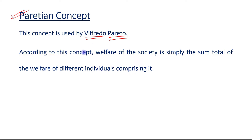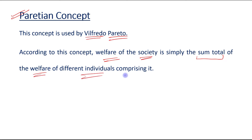The Paretian concept says that if you want to calculate the welfare of the society, it is basically the sum total of the welfare of different individuals in the society.